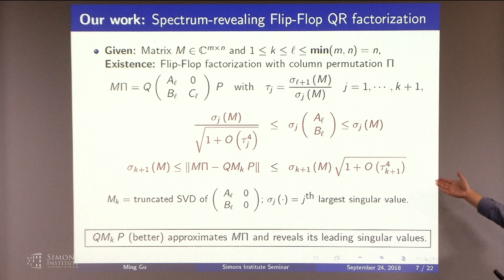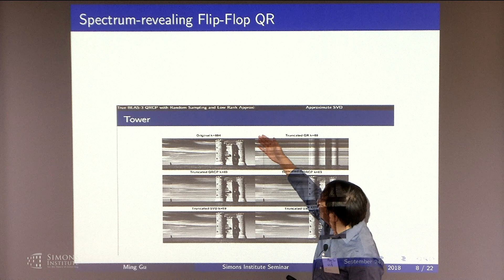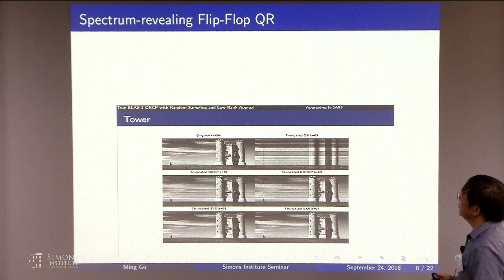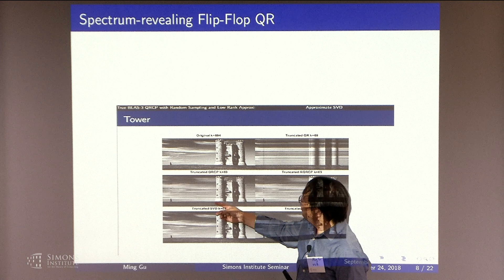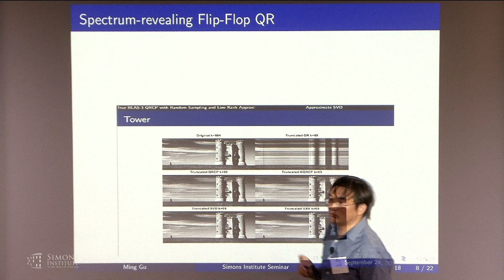An example to see all the differences. Here you have your tower. This is going to be 600 by 600 matrix. And if you do truncated QR with 60 steps, without any column shuffling, this is what you get. You lose the whole picture. If you do truncated QR with the column pivoting, with 60 steps, you get something like this. There's some smearing of the clouds. But you get something.